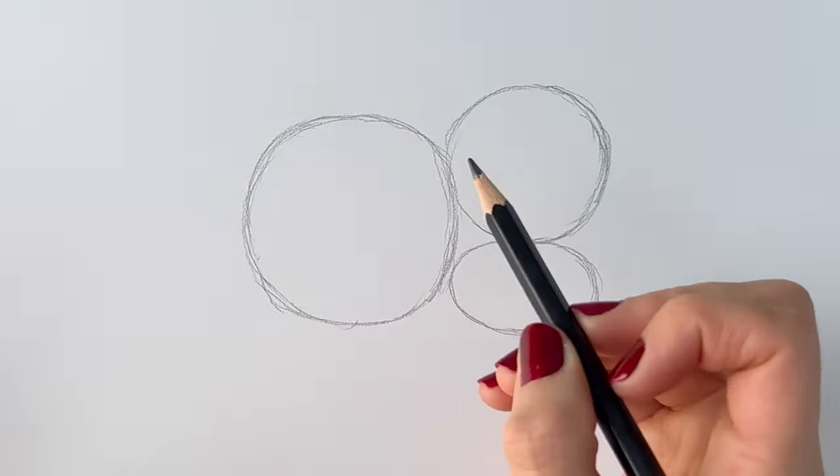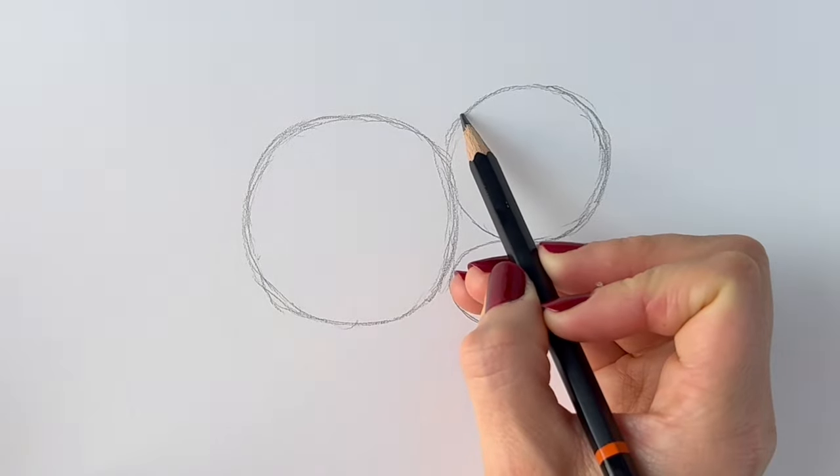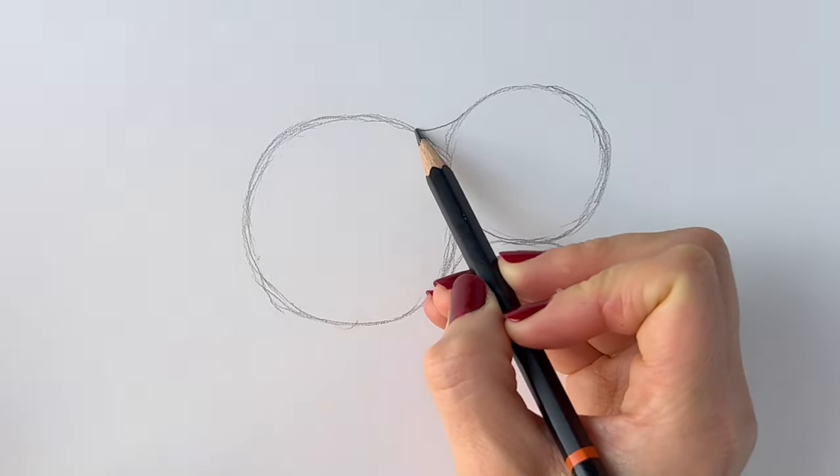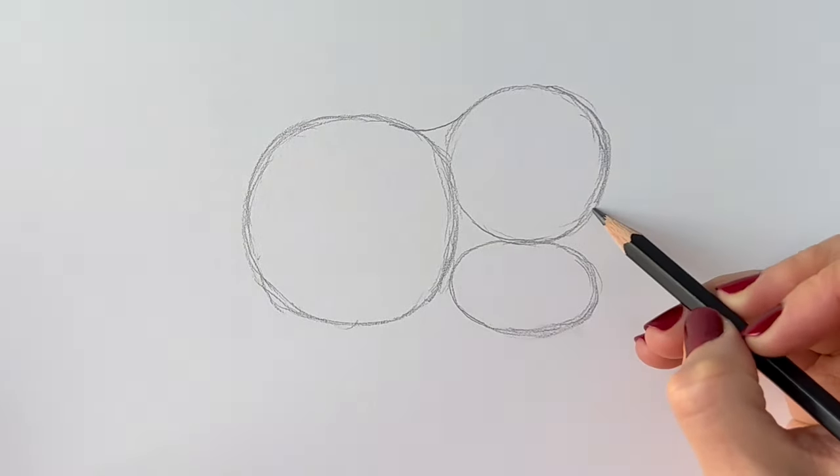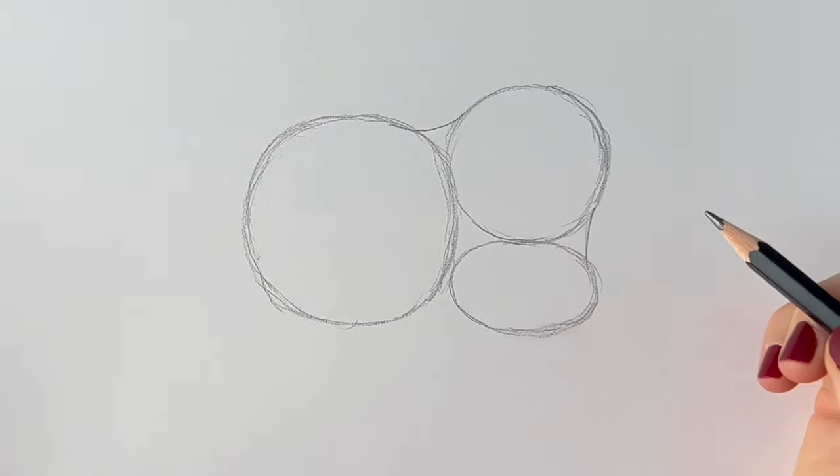Now we're going to join up the head to the body area. I'm going to do that by just drawing a curved line from this circle to that circle. Now I'm going to join up this one to that one with a little curved line coming down here.